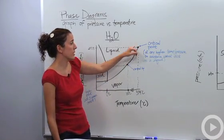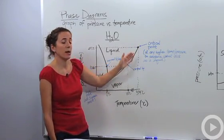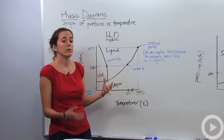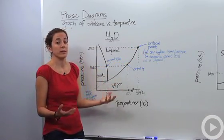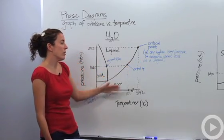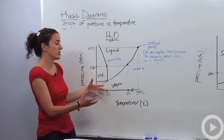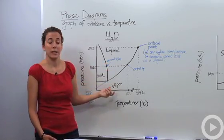There also is something up here called the critical point. The critical point is a place where anything, any pressure or temperature that's higher than the critical point, there's no way the liquid phase will exist. The substance will only exist in the gaseous phase. So this actually can tell us a lot of things in terms of where the substance is in terms of the state of matter that it's in.